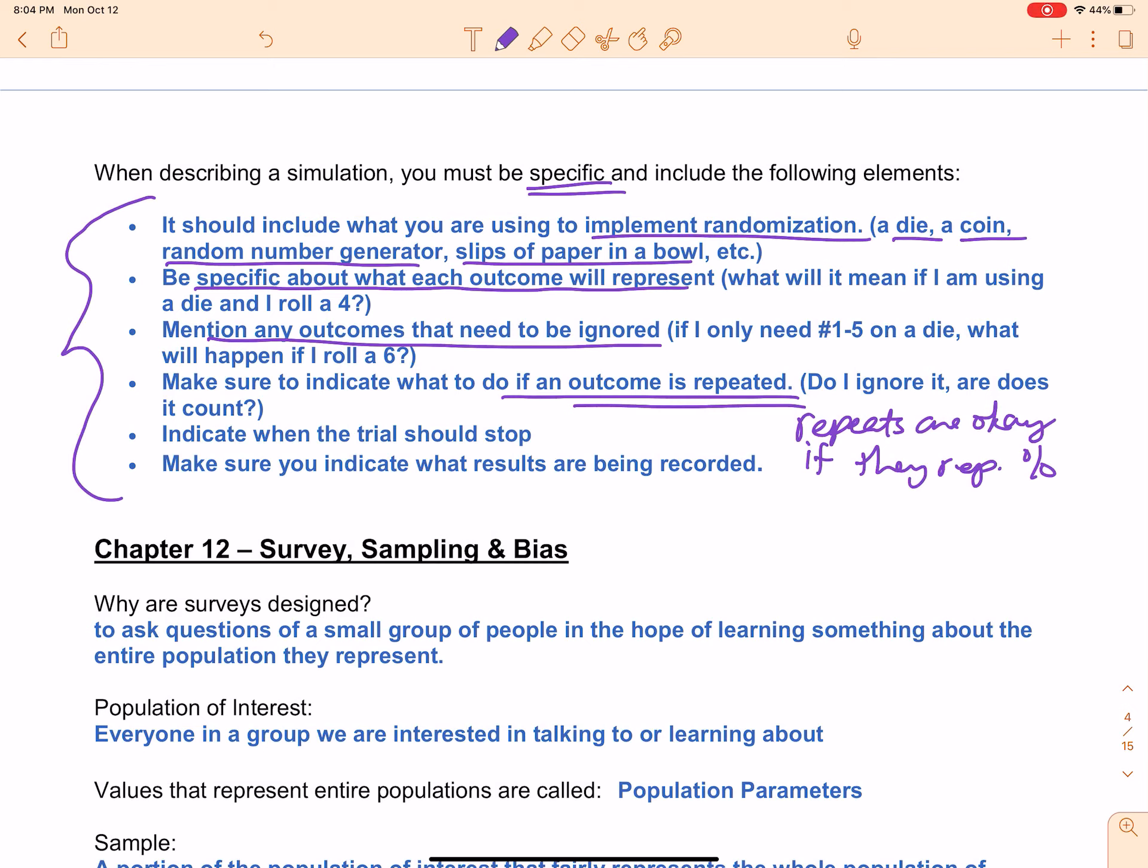You have to indicate when the trial will stop. In other words, if I'm rolling the die to simulate some outcome, when do I stop rolling it? You have to tell me what that's going to look like. And of course, you want to make sure what results are being recorded. We want to know what we're doing.